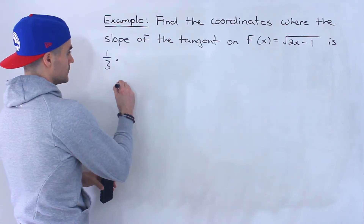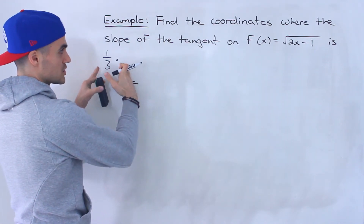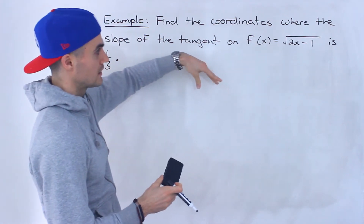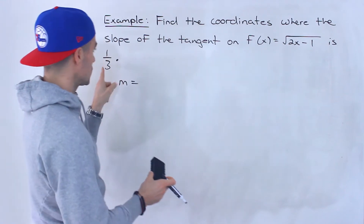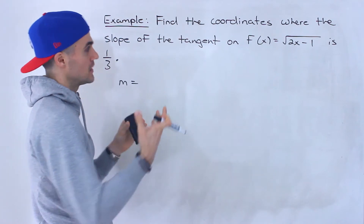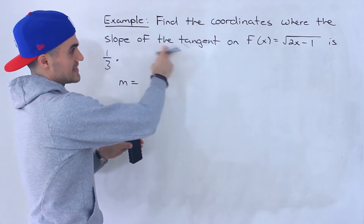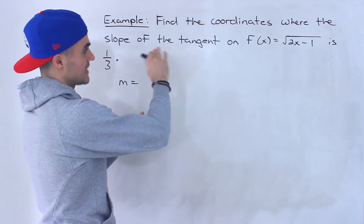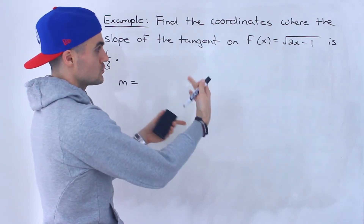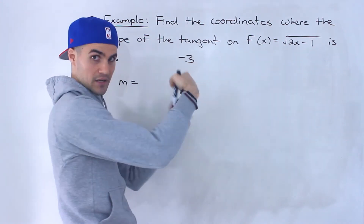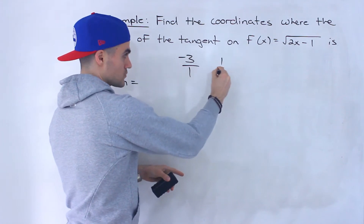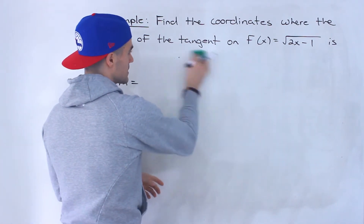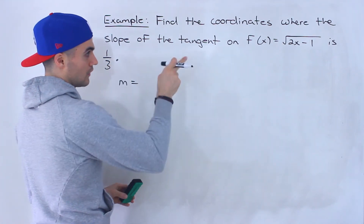So what we have to do when we're doing a question like this — we know the slope of the tangent we're looking for. We have to find a general expression for the slope of the tangent for this function, and then find at what x values that expression equals 1 over 3. As a heads up, this question could also have been worded as: find the coordinates where the tangent is parallel to a line having a slope of 1 over 3. Or it could say find the coordinates where the tangent is perpendicular to a line with a slope of negative 3 — since the perpendicular slope to negative 3 is the negative reciprocal, which is 1 over 3.